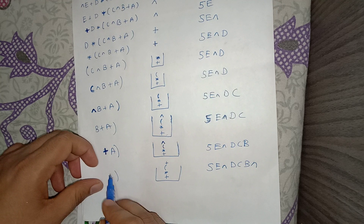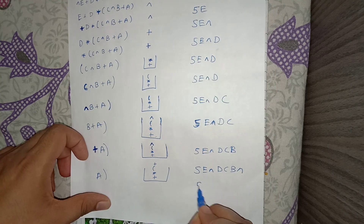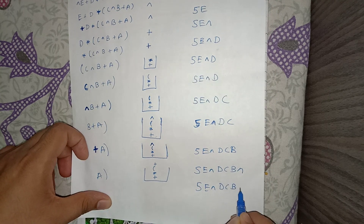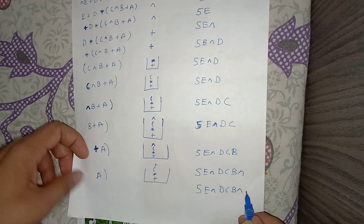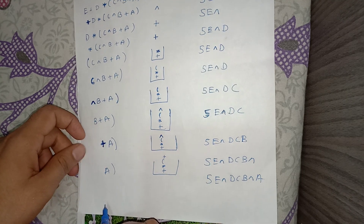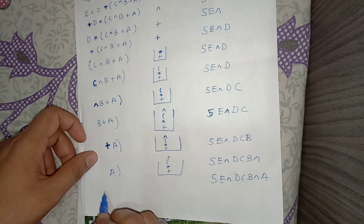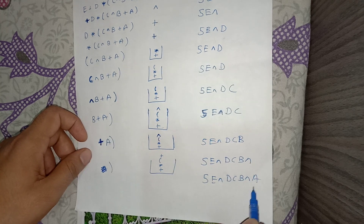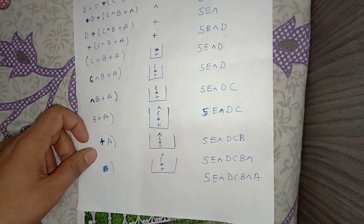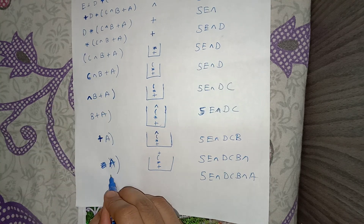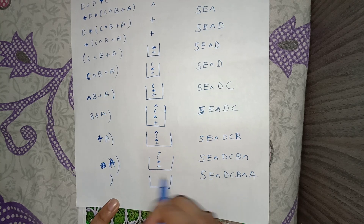The next token is A, which is an operand, so it goes directly to the output. Output is now: 5, E, XOR, D, C, B, XOR, A.